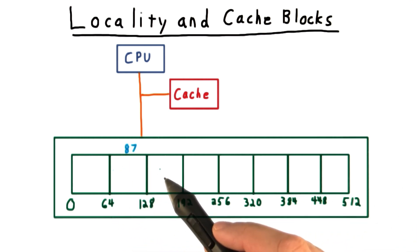If we access the memory location in 87, then we reason that we are likely to use addresses close to this one, and so we put the whole block from 64 to 128 in the cache.